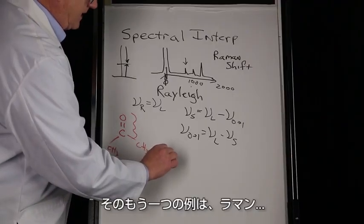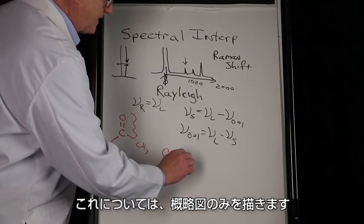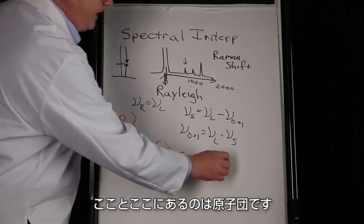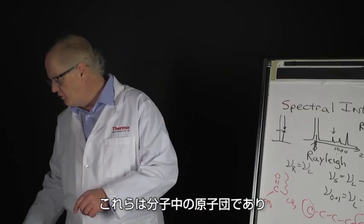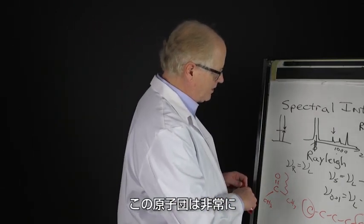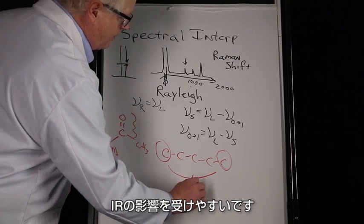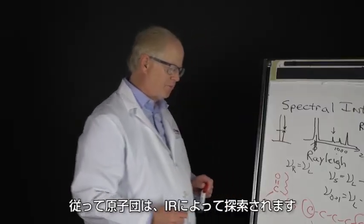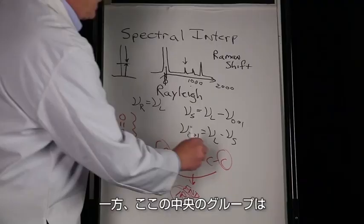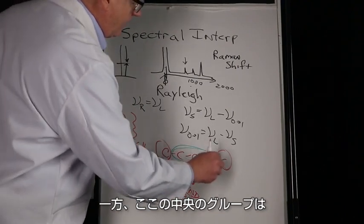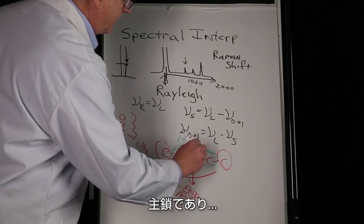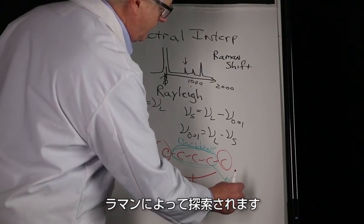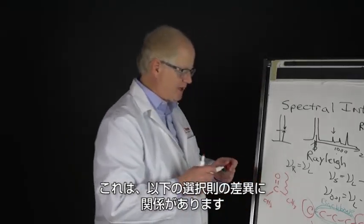Another example of that is that Raman - and I'll just draw this as a schematic, we won't worry about details - but this right here and this right here are end groups. They're the end groups of that molecule, and the end groups are very susceptible to IR. So the end groups are probed by IR, whereas the groups in the middle right here, the backbone, is probed by Raman.